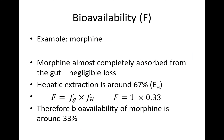Bioavailability depends on both gut and liver effects. As an example, morphine is well absorbed via the oral route, but has fairly high hepatic extraction, around 67%.